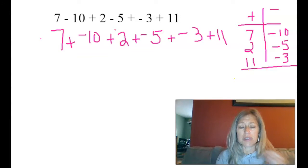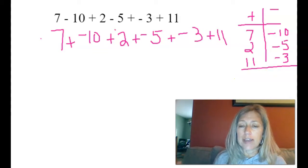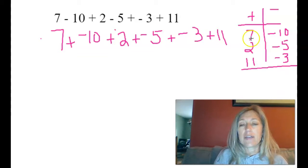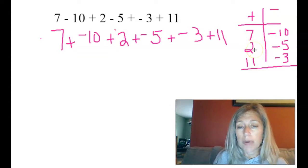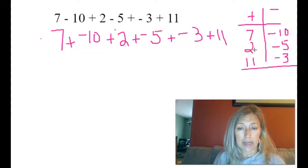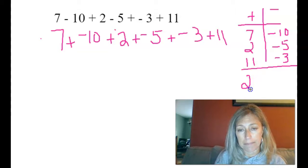The reason we do it this way is because it's kind of like combining like terms. I have 7 positives and 2 more positives. So 7 plus 2 is 9, plus 11 is 20.